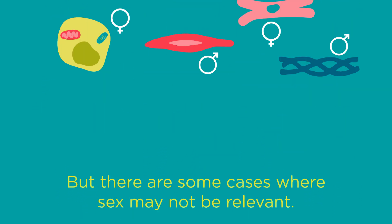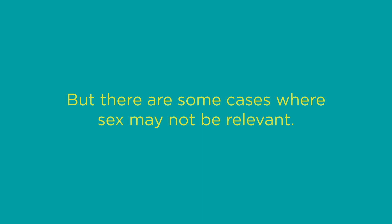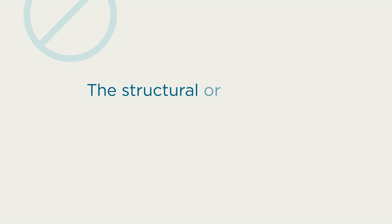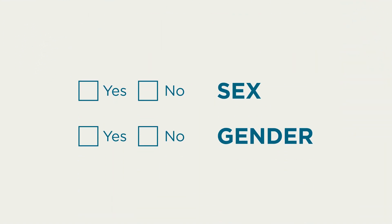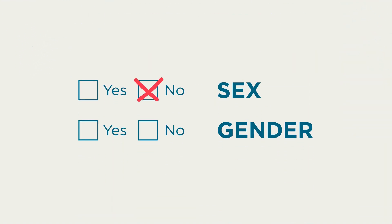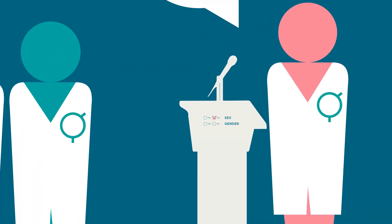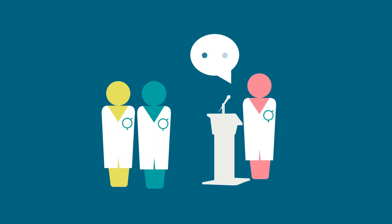But there are some cases where sex may not be relevant. Examples might include the study of the structural or molecular biology of proteins, carbohydrates, or lipids, pathogens grown in vitro in an acellular environment, or the preclinical design of some biomedical technologies. However, applicants who exclude sex from the research design must always provide compelling justifications.